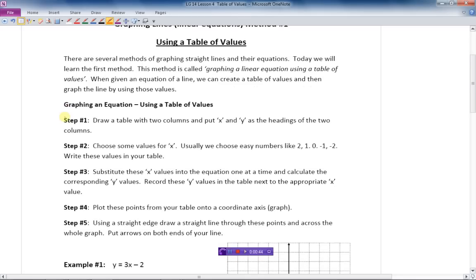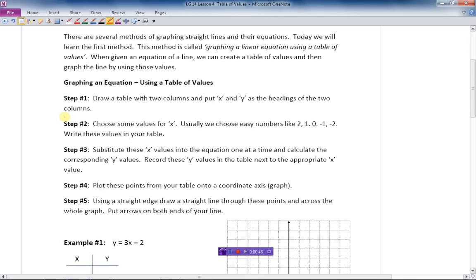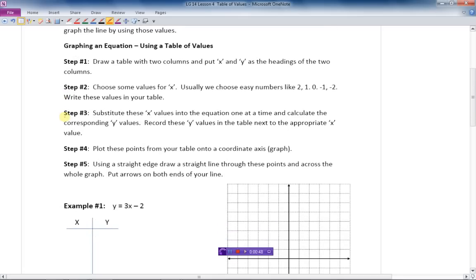Then what we are going to do is choose some X values. We can choose randomly any X values. I like to choose really easy numbers like 2, 1, 0, negative 1, negative 2. Just really easy numbers. Why use hard ones if you don't need to? Then we put those in the table.